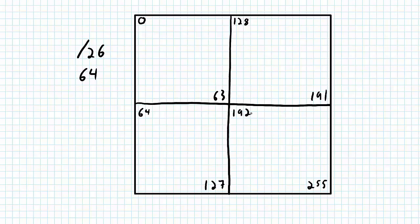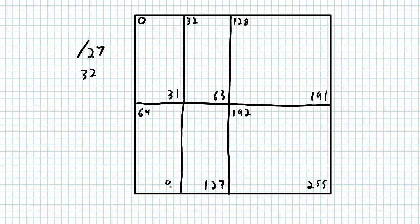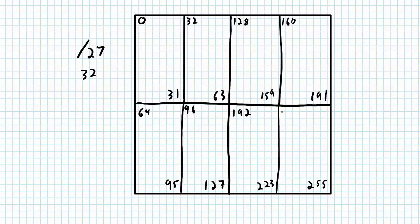Splitting these all in half again gives me slash 27 networks with 32 IP addresses each: 0 to 31, 32 to 63, 64 to 95, 96 to 127, 128 to 159, 160 to 191, 192 to 223, and 224 to 255.